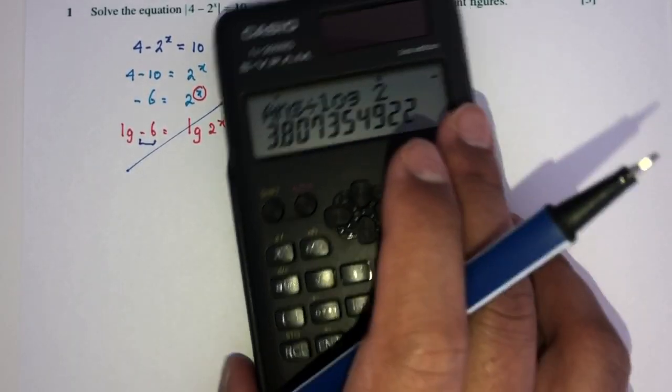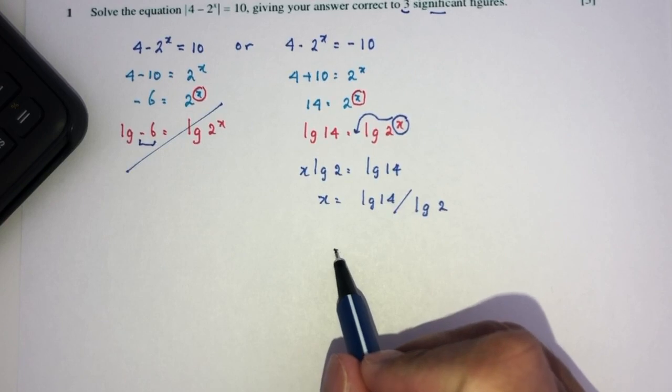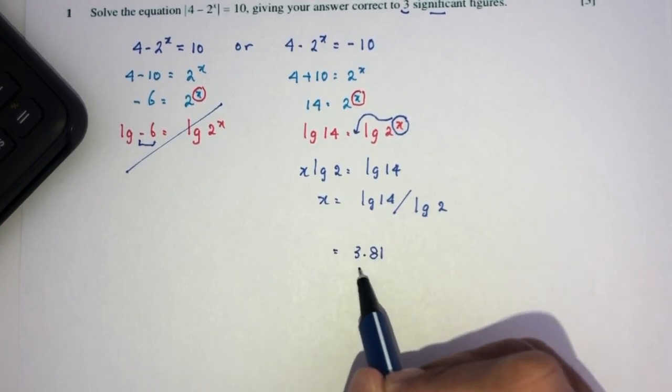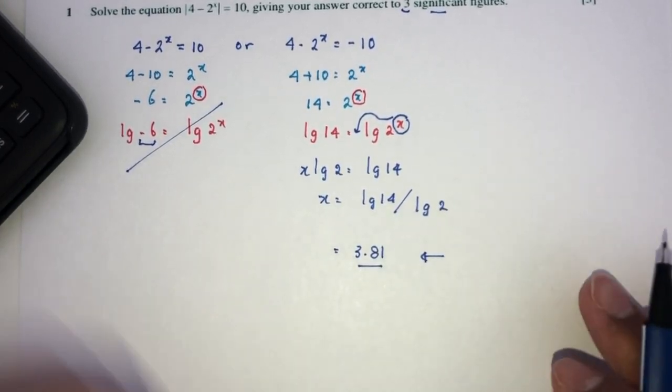That will be 3.81 for your answer correct to 3 significant figures. Here you go, and this is your question number 1.